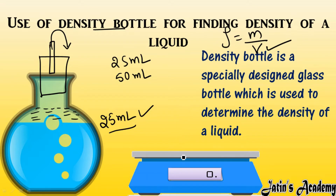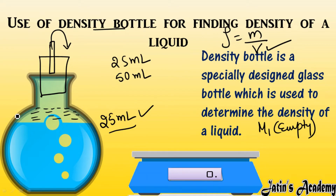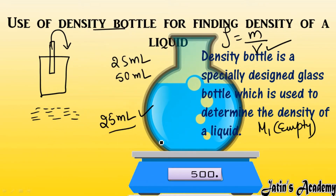First of all, take the empty density bottle and measure its mass — for example, the empty density bottle mass is m1. Afterwards, pour the liquid into it — for example, 25 ml of liquid. Clean all the sides of the density bottle so no extra mass is added. Then place the filled density bottle on an electronic balance and measure the mass — for example, this mass is m2.